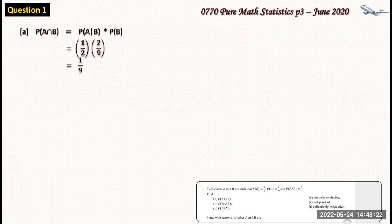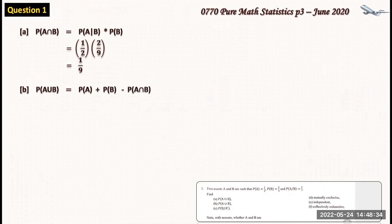Part (b) wants us to calculate the probability of A union B. The probability of A union B is given by P(A) + P(B) − P(A∩B). Substituting these values: P(A) is one third, P(B) is two over nine, and P(A∩B) is one over nine. Simplifying these gives us a value of four over nine.